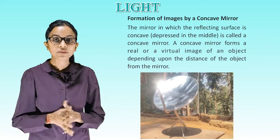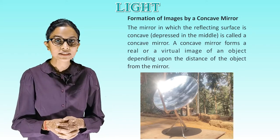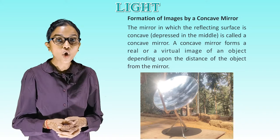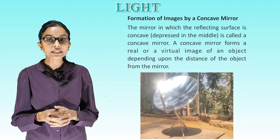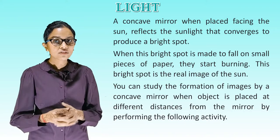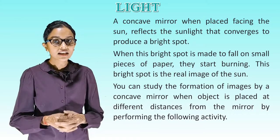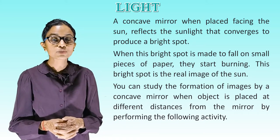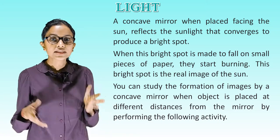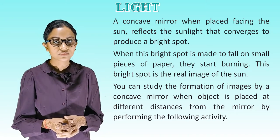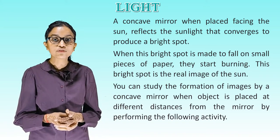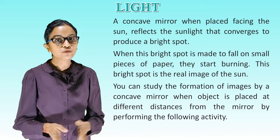Formation of images by a concave mirror: the mirror in which the reflecting surface is concave — depressed in the middle — is called a concave mirror. A concave mirror forms a real or virtual image of an object depending upon the distance of the object from the mirror. When placed facing the sun, a concave mirror reflects sunlight that converges to produce a bright spot; when this bright spot falls on small pieces of paper, they start burning. This bright spot is the real image of the sun.